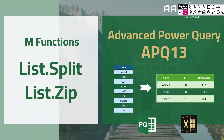Hello everyone and welcome to a new video from the Advanced Power Query series, video APQ-13. In this video we are going to look at two M-code functions: List.Split and List.Zip. The example today will have one column of data containing information about some people. In the first line we have the name, then the ID, then nationality, and then another name, ID, and nationality, and so on.